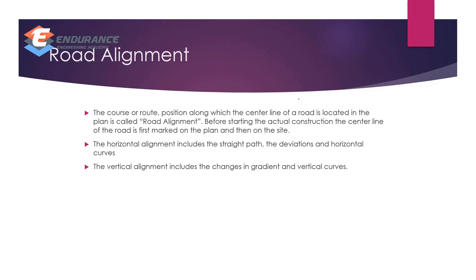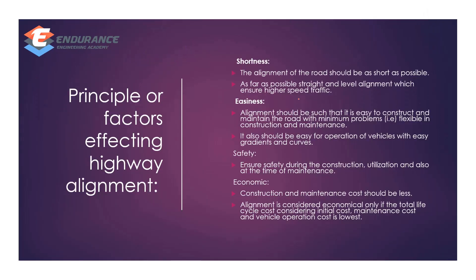Horizontal alignment includes straight path, deviations, and horizontal curves. Horizontal alignment involves the path, deviations, and horizontal curve turning. Vertical alignment involves changes in gradient — you can find the gradient and vertical curves. This is vertical alignment.